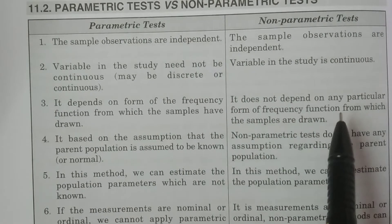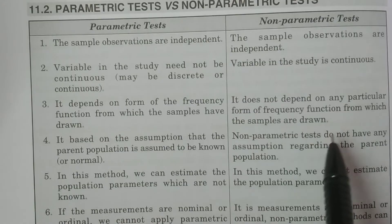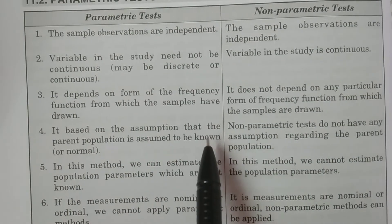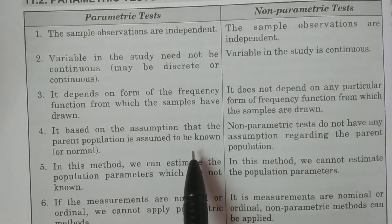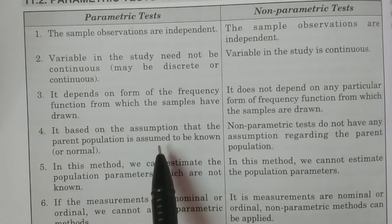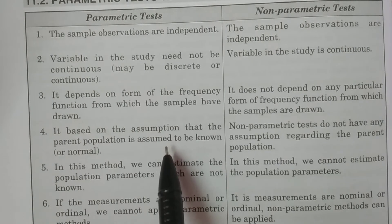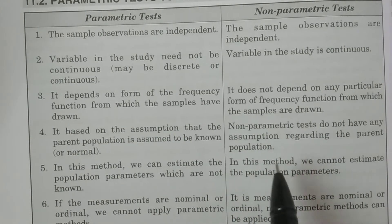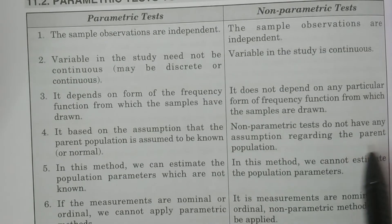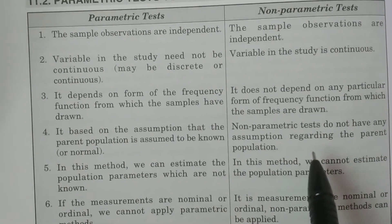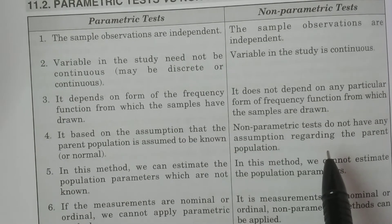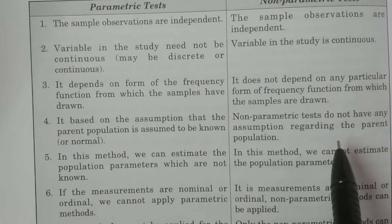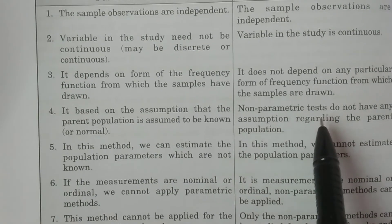For the non-parametric test, it does not depend on any particular frequency function. The fourth point: in the parametric test, it is assumed that the parent population is known — generally a normal distribution. Whereas the non-parametric test does not have any assumption regarding the parent population.